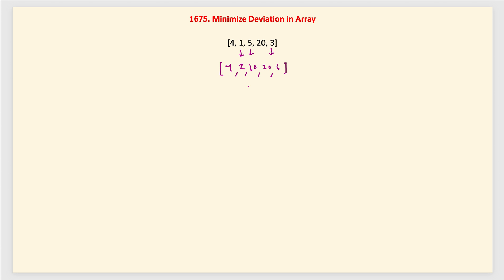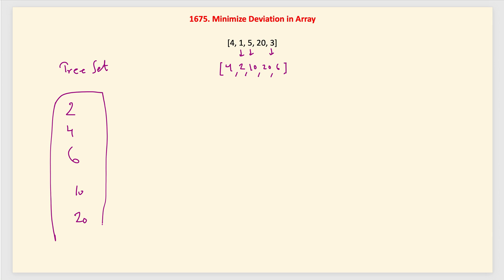For finding the deviation, we need to know the minimum and maximum values of our data at every step. The good data structure here is a TreeSet. If we add all elements, the TreeSet becomes sorted: 2, 4, 6, 10, 20. TreeSet.first() gives us the minimum value (2) and TreeSet.last() gives us the maximum value (20). We will repeatedly get the first and last elements to compute the deviation.